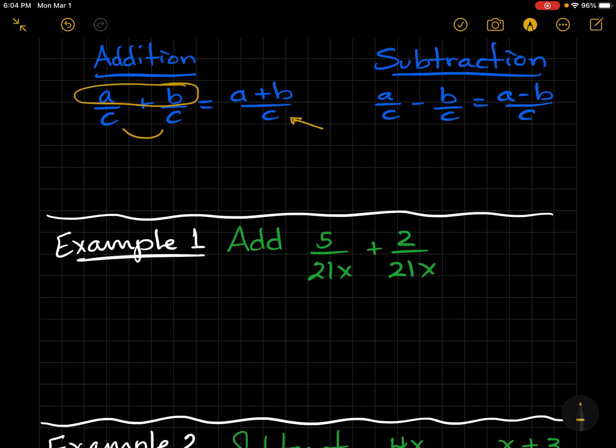For example 1, we already have common denominators. So we're going to add the numerators and get 7 over 21x. You cannot leave the answer like that. You must reduce.